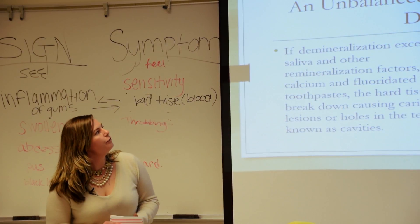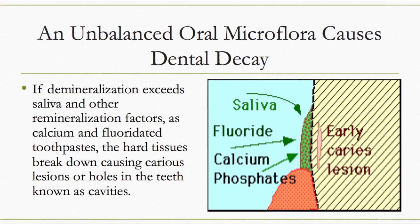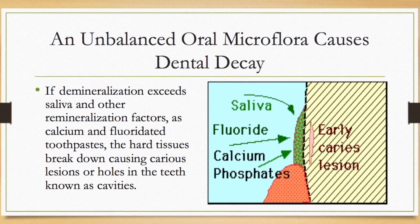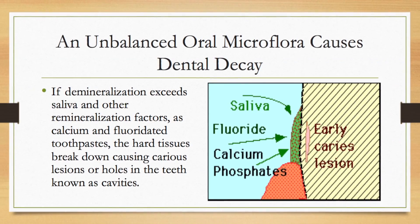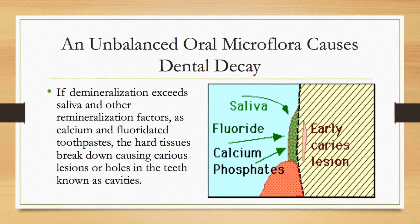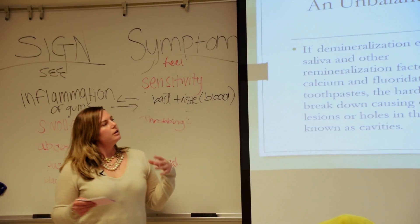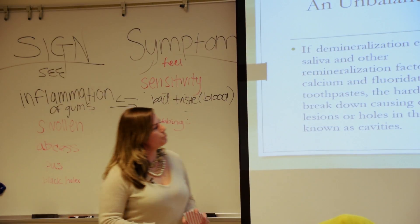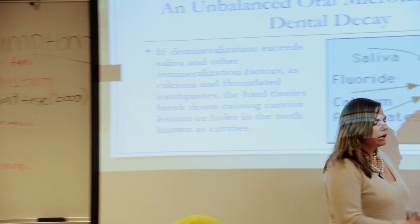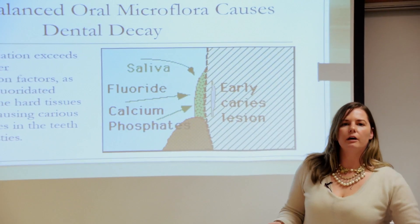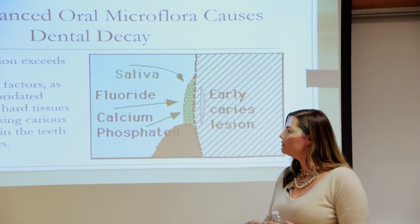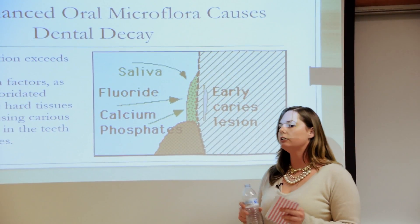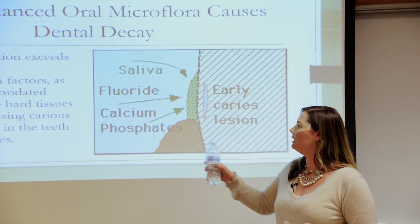If we let bacteria overtake everything, we get an unhealthy balance of oral microflora, which causes decay. If saliva, fluorides, and calcium phosphates aren't enough to help the tooth, it will start breaking down first with a carious lesion, and then those will turn into cavities.